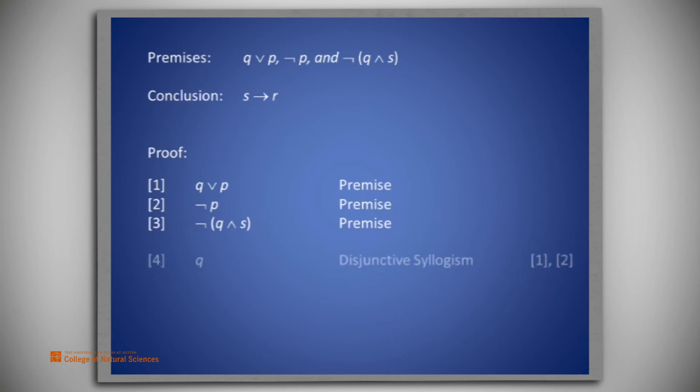From the first two premises, we see that Q must be true, since at least one of Q or P is true, and P is false, so the disjunctive syllogism rule, applied to lines 1 and 2, results in Q.